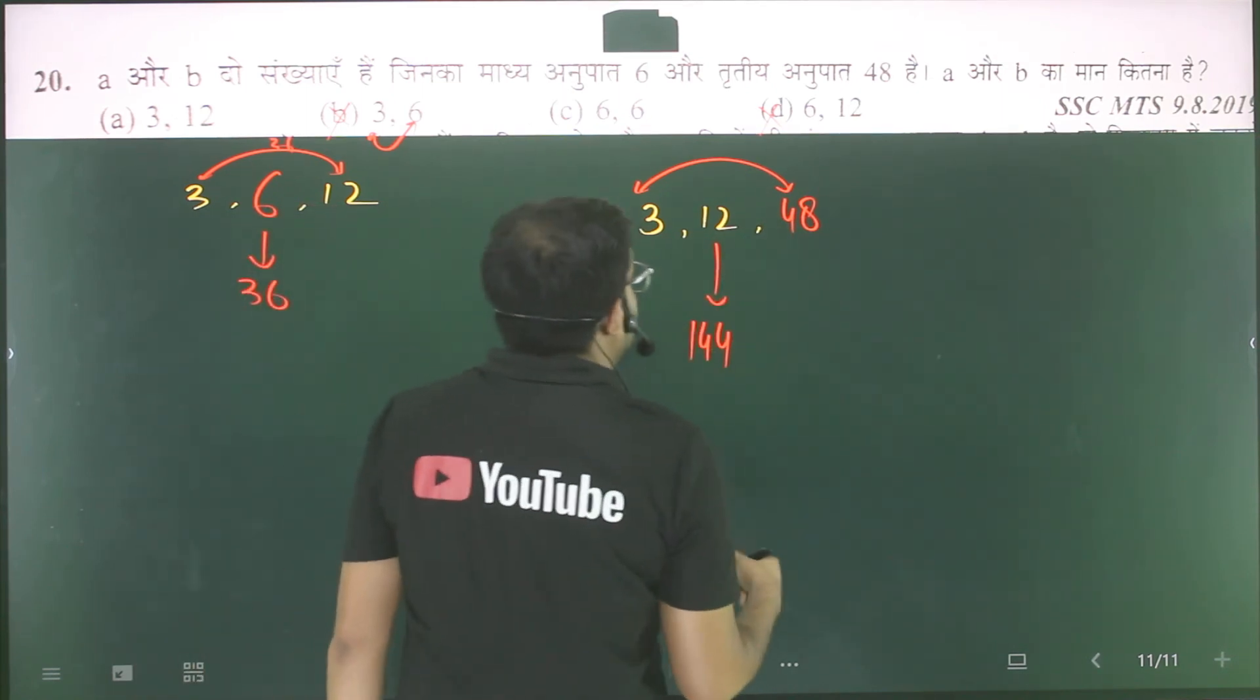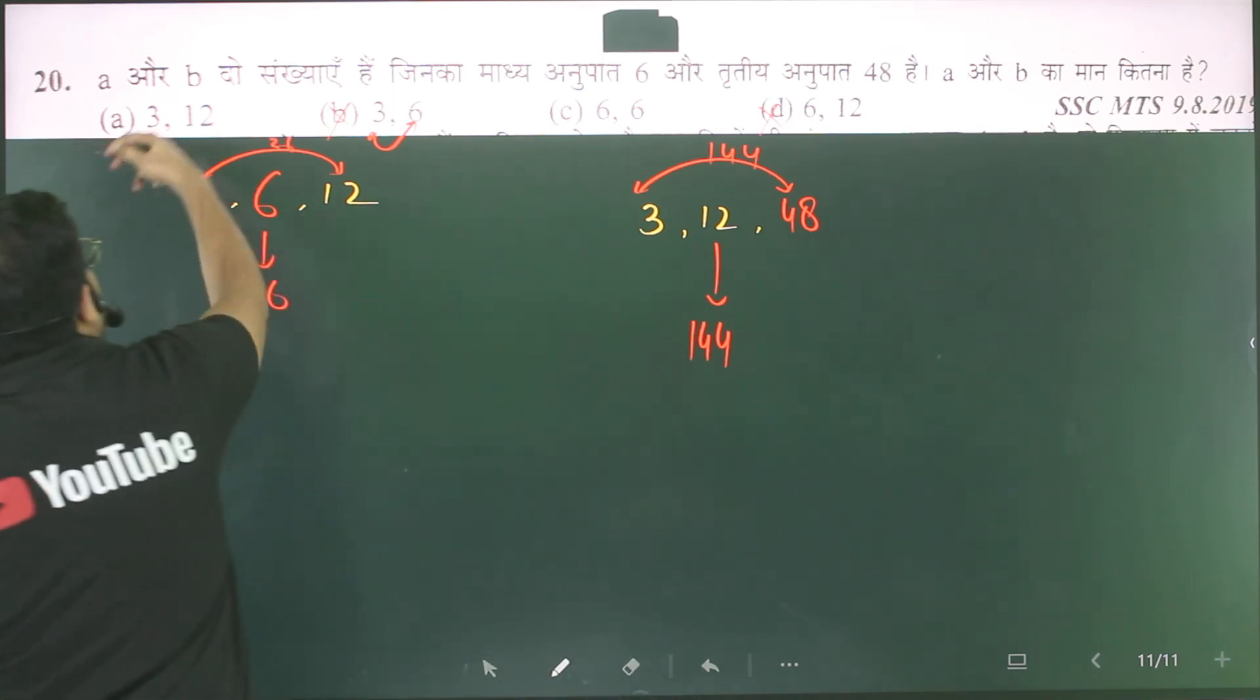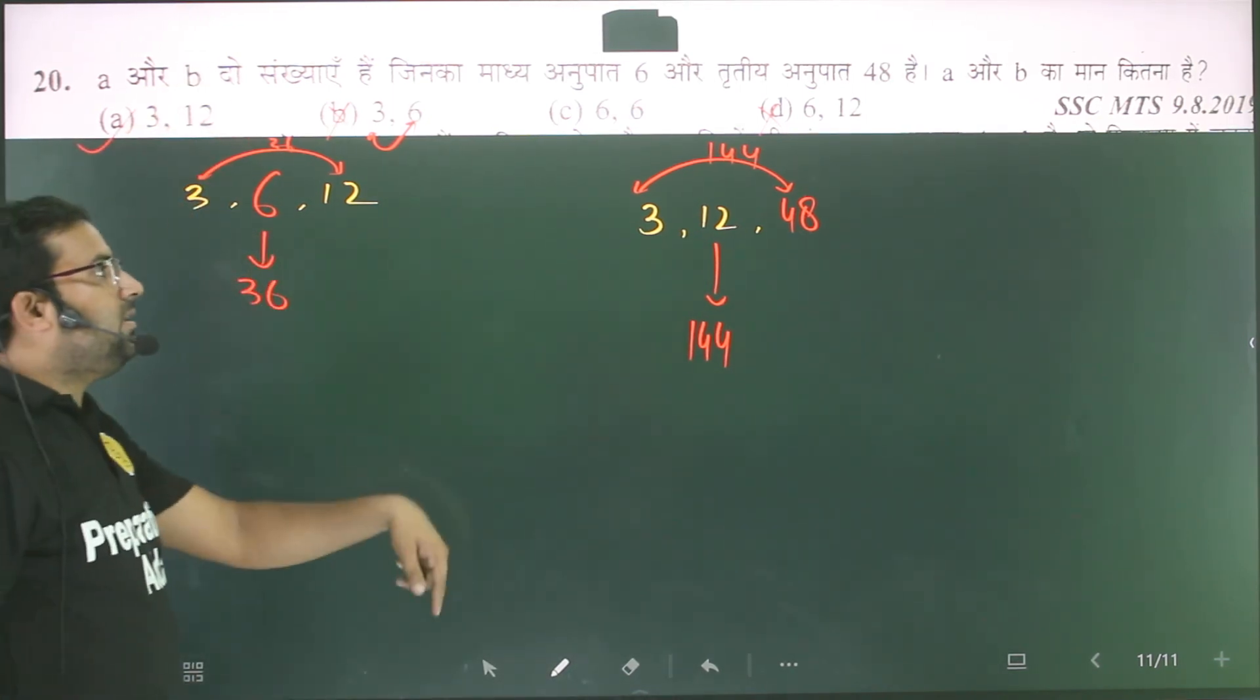We need to do it with 48 and 3. We need to do it with 3, 12, 3, and 24. It will be 144. This means what is our option? It is okay. It is okay with the first condition and the other condition.